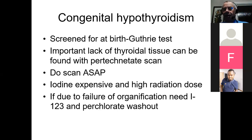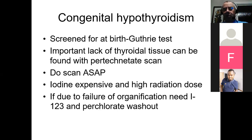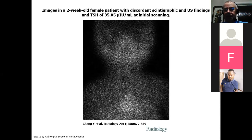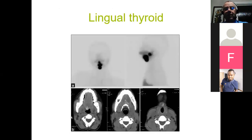Pertechnetate is fine for the scan; we only use radio-iodine if we're looking for a failure of organification. This case is a two-week-old infant — slightly later than we'd like — with very high TSH. A pertechnetate scan shows that although ultrasound showed a thyroid was present, there is no uptake of tracer. This is classically what we see in congenital hypothyroidism.